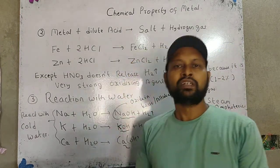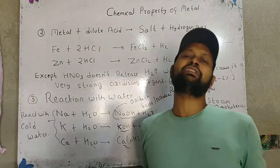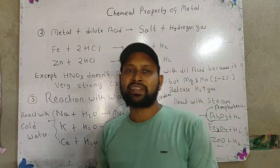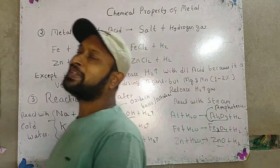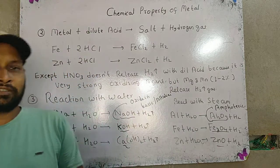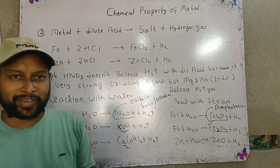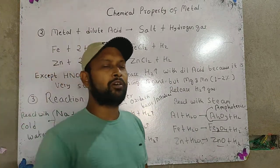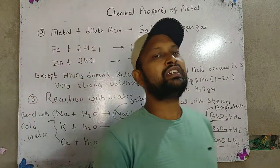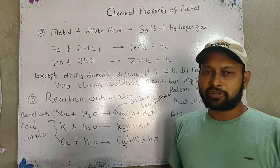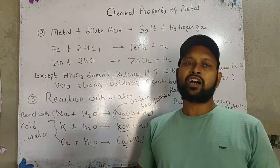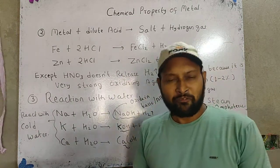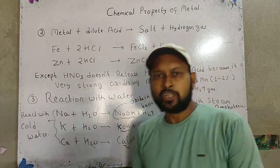Amphoteric oxide — the metal oxide which can behave as both acidic and basic in nature is known as amphoteric oxide. For example, aluminium oxide and zinc oxide are called amphoteric oxides.